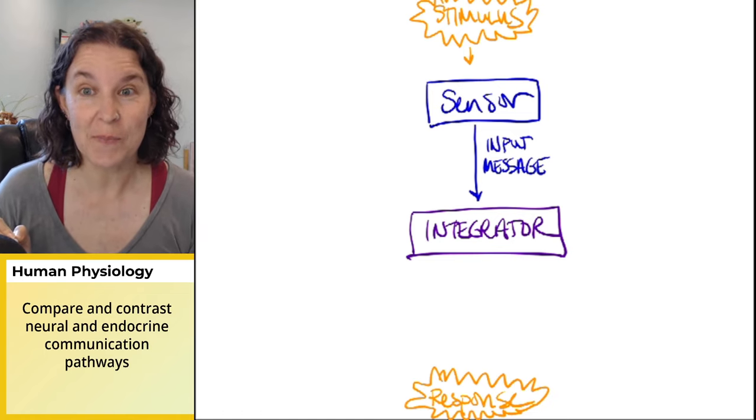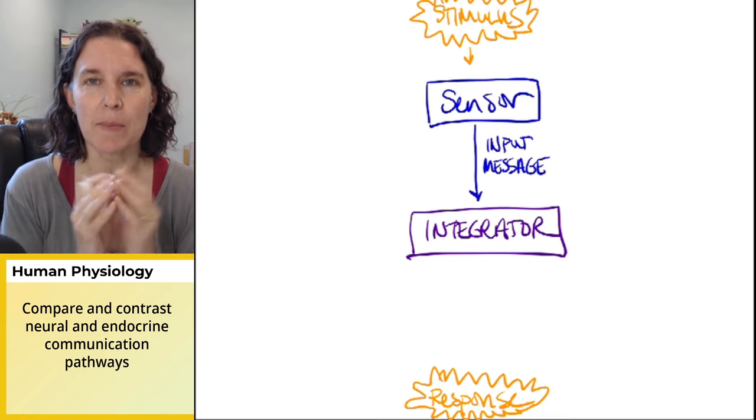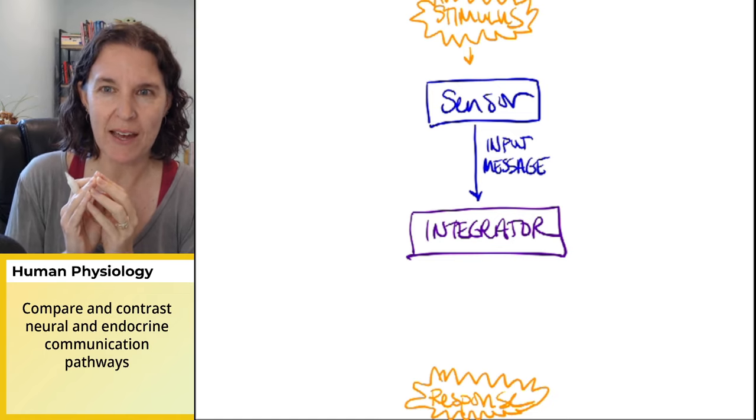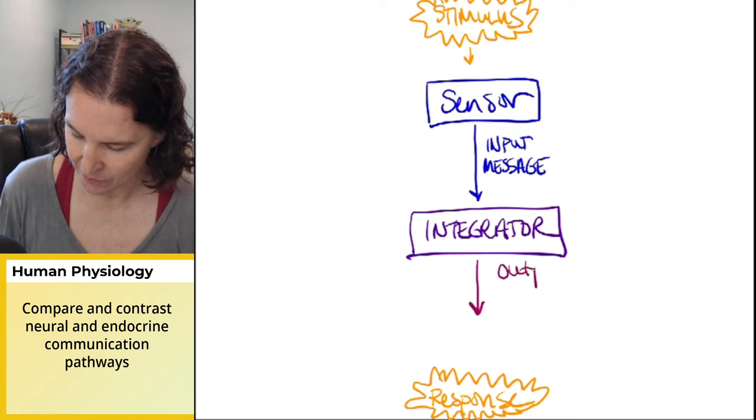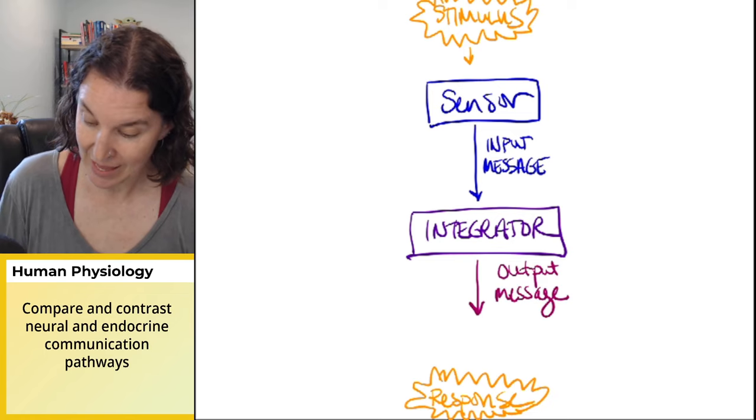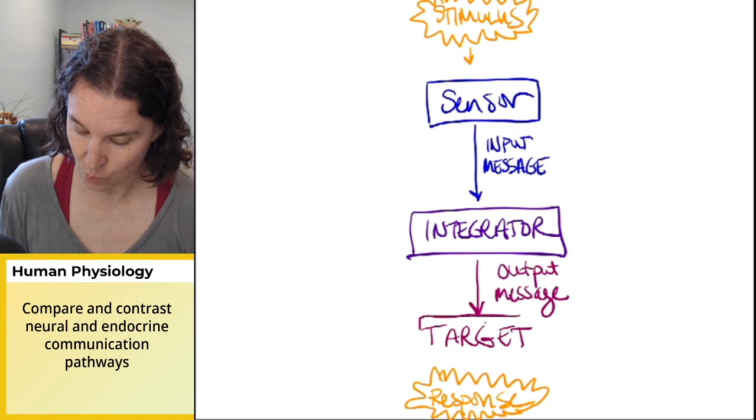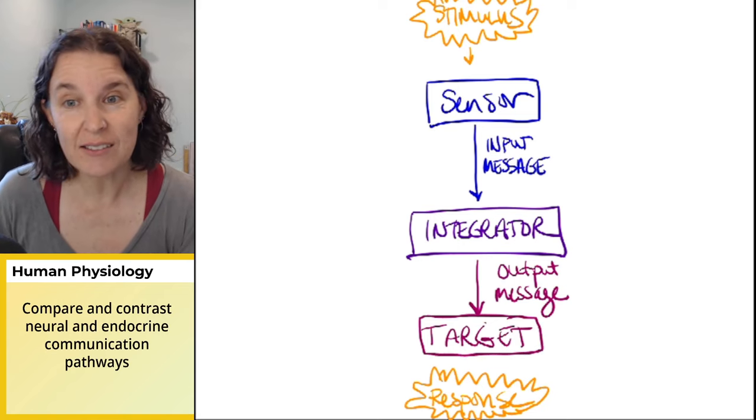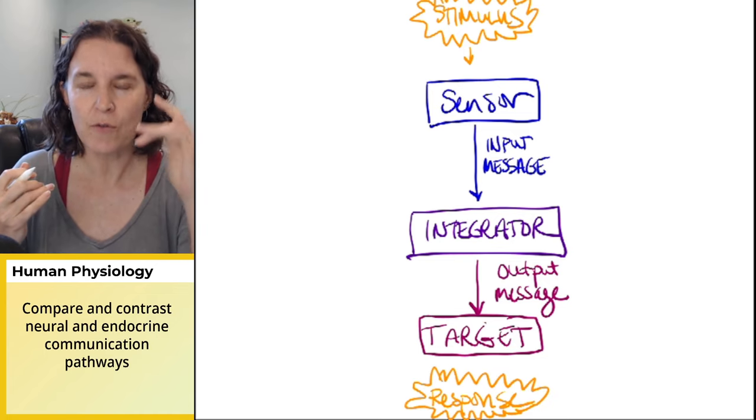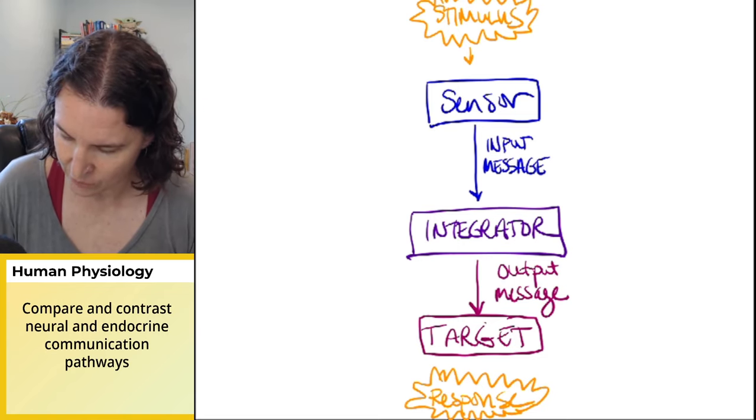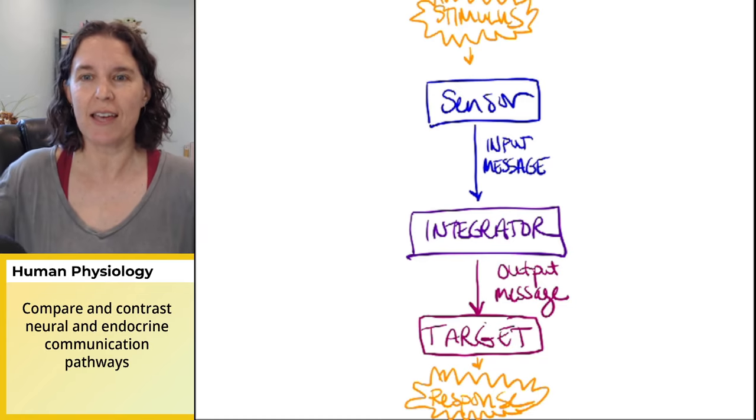The sensor then proceeds to generate an input message. Stimulus caused something to happen, the sensor picked it up, and then the sensor generates an input message. That's another topic of physio, a cellular mechanism that we will look at. We will explore all the little molecules and all the channels that are opening and closing that allow for the creation or the propagation of that input message. That input message is going to travel to an integrator. The integrator takes that input message and says, hmm, you're telling me that sensor over there is telling me that this is happening. I think we should do something about that.